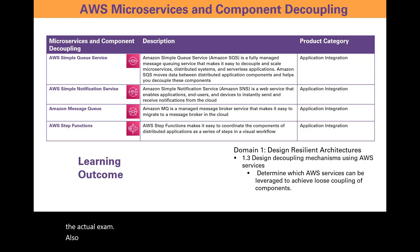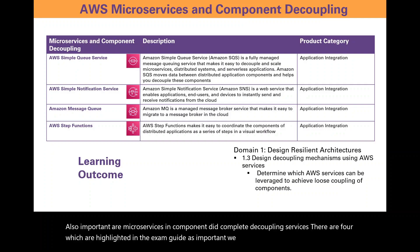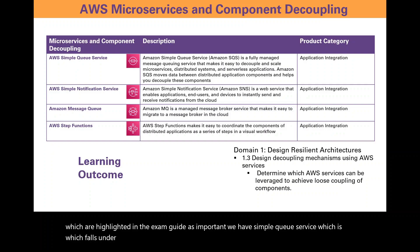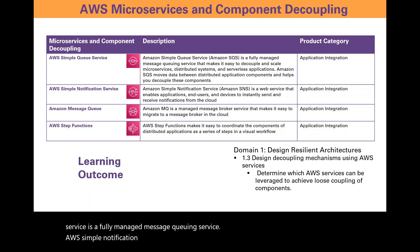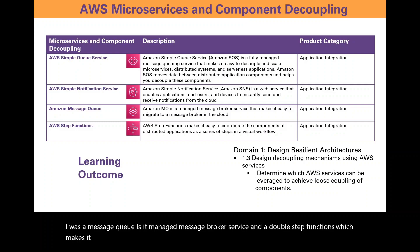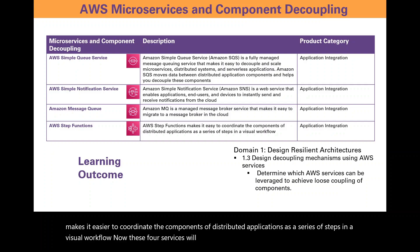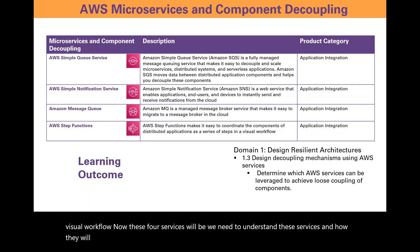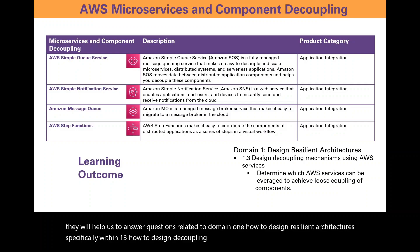For microservices and component decoupling, four services are highlighted in the exam guide: AWS Simple Queue Service (SQS), a fully managed message queuing service; AWS Simple Notification Service (SNS), a fully managed notification service; Amazon MQ, a managed message broker service; and AWS Step Functions, which makes it easier to coordinate components of distributed applications as steps in a visual workflow. These services are important for Domain 1 — specifically designing decoupling mechanisms using AWS services.